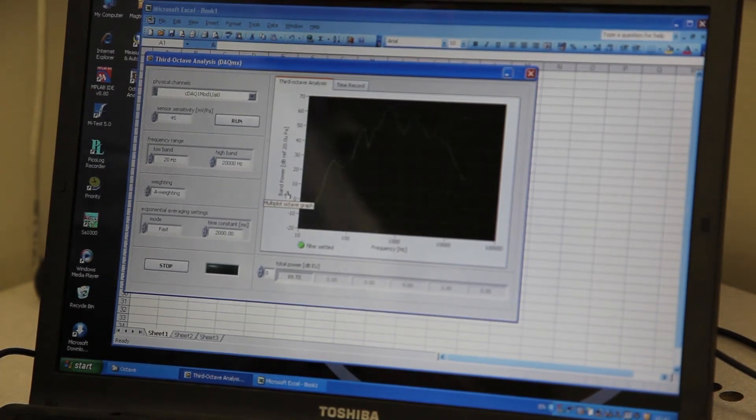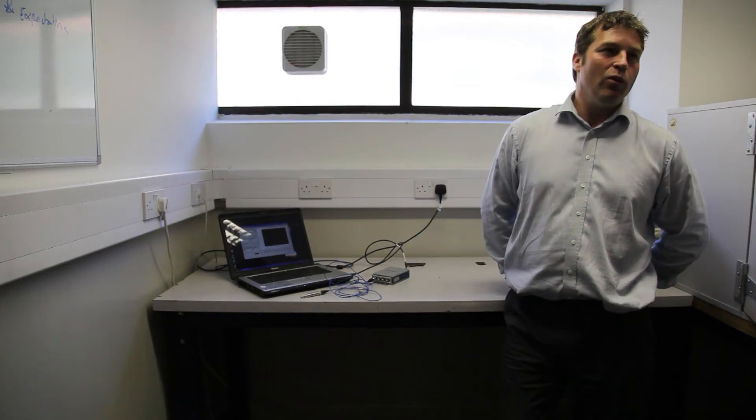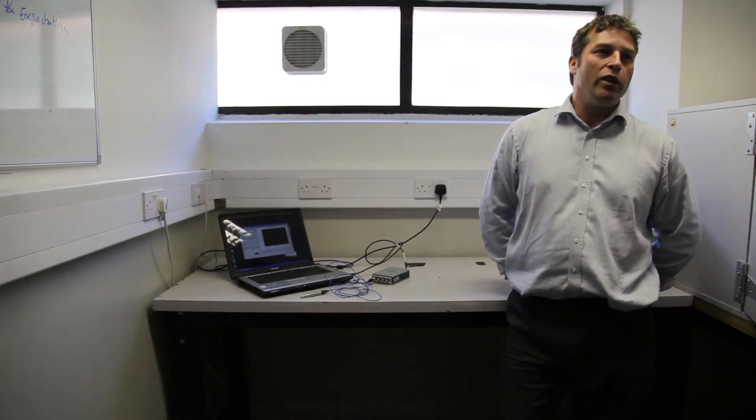So normal dB levels will just give you a level, this will actually tell you the type of noise, whether it would be happy children or noisy unhappy children.